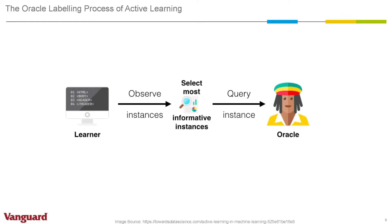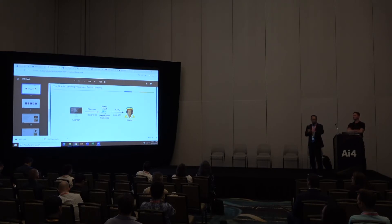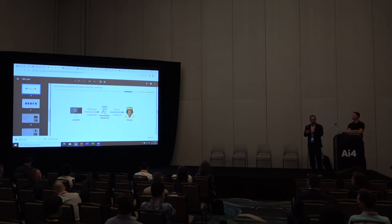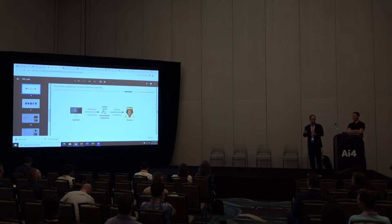A couple of key concepts here — the Oracle is basically how the human and model will work together. Once you use a few seed training data points to build your initial model, which isn't very accurate, you can use that to pick the more informative data points and ask the Oracle — which is just a human in this process — to get Oracle-labeled data back so you can train your model.